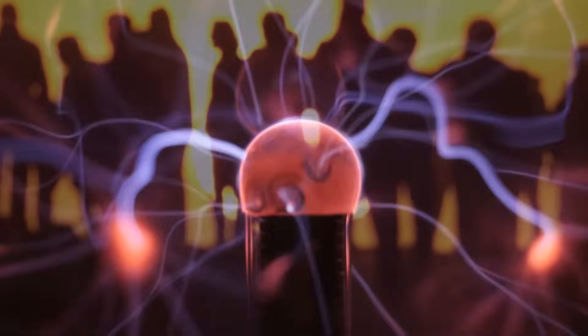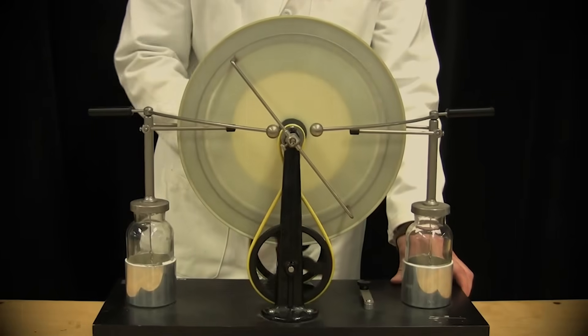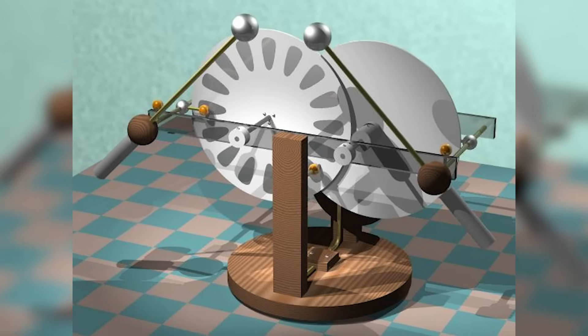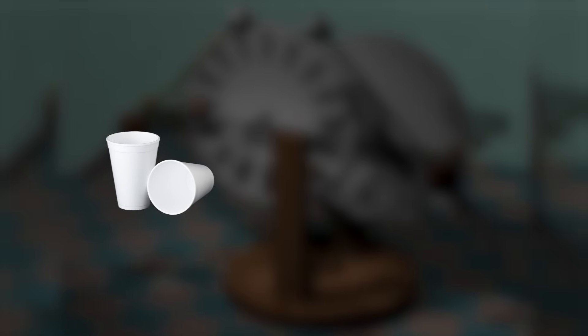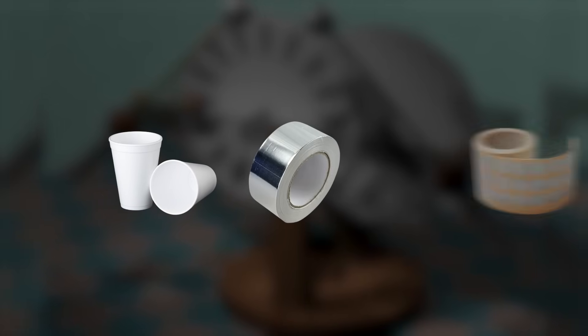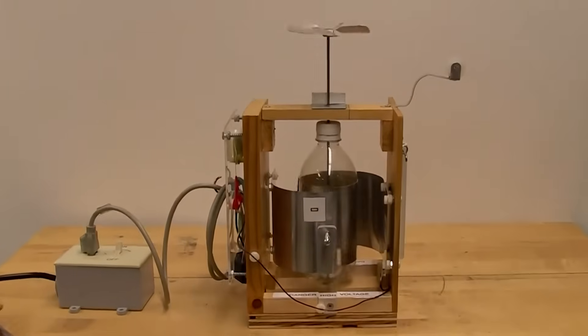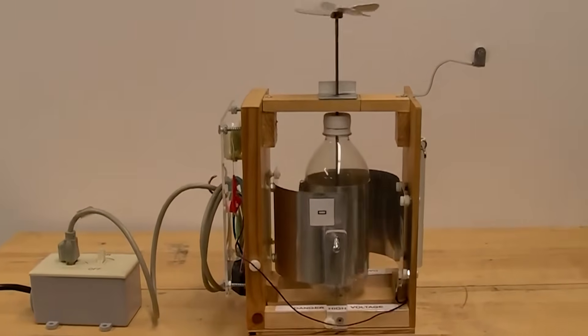For many years, people believed electrostatic forces were too weak to be useful. Early electrostatic machines were viewed as toys. There were small motors made from styrofoam cups, aluminium tape, and foil disks. They spun gently when charged, but few took them seriously.